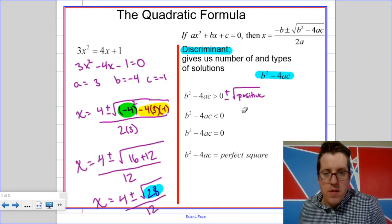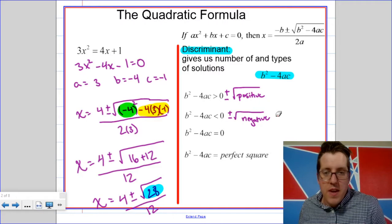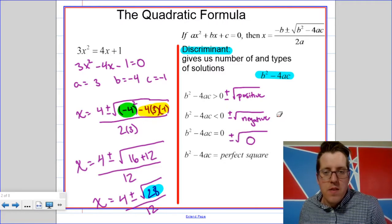It's the thing underneath the square root, and taking the square root tells us something. If the discriminant is greater than 0, that means that our problem is going to have a plus or minus the square root of a positive in it. If the discriminant is less than 0, that means our problem is going to have a plus or minus the square root of a negative. And if our discriminant is 0, that means our problem is going to have a plus or minus the square root of 0.